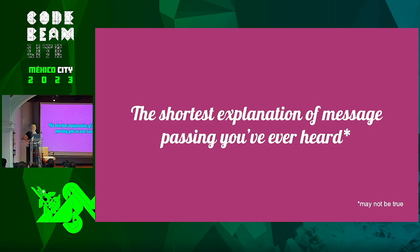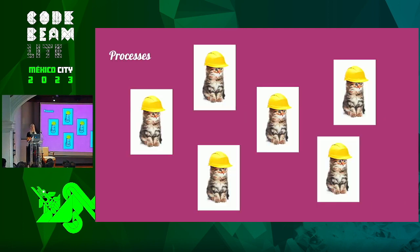Let's kick it off with a short explanation of message passing. This will not be exhaustive; I'm going to skip over a lot of stuff. So first of all, processes. These are the workers of Elixir. Everything that happens, all your code, everything running on the machine, happens in the context of a process. Every process can only do one thing at a time. If you want concurrency, if you want multiple things happening at the same time, you need your processes to communicate.